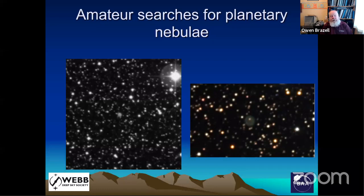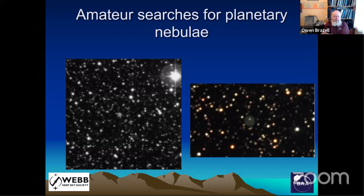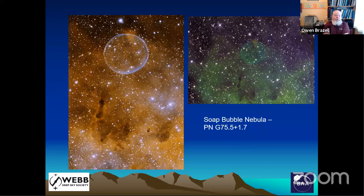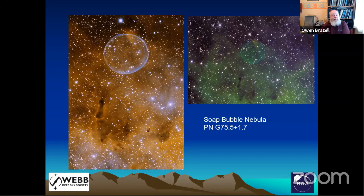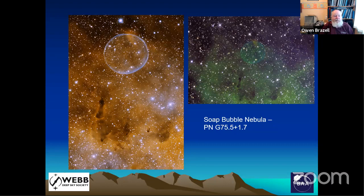Amateur searches take two forms. One is searching the online surveys, which has been fairly productive — people still find quite a lot of new nebulae that professionals didn't pick up. There was a group called Deep Sky Hunters that used to collate these, but this seems to now be taken over by the French, who have a website covering new discoveries. Also, people are finding these in their own images — on the right here is something that became known as the Soap Bubble Nebula, near NGC 6888. Interestingly, three people independently discovered it within about four weeks. This is what happens when you have a four-metre telescope at your disposal, but it shows the classical signs of a planetary nebula.